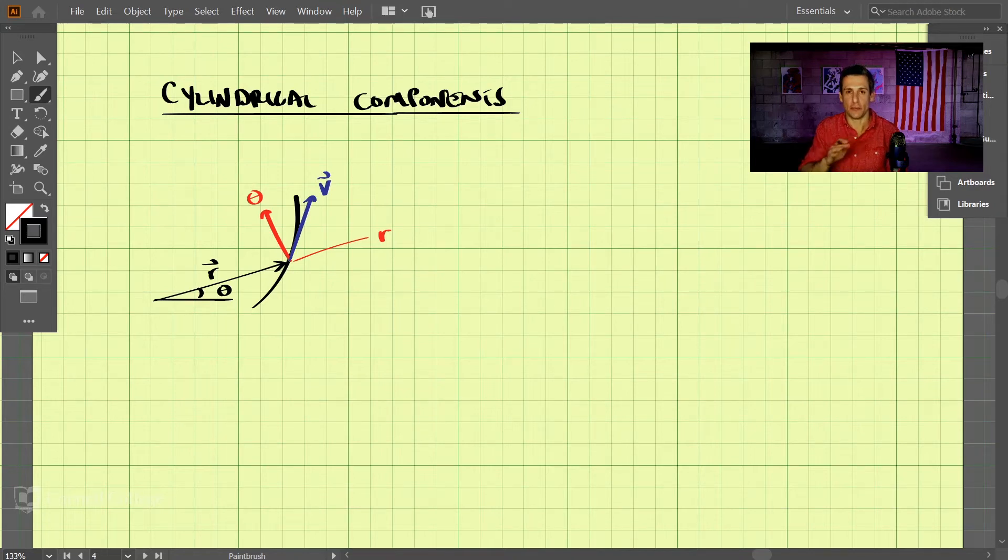In some problems, it's convenient to break things down into cylindrical coordinates. So in the cylindrical coordinate system, if we have a particle, let's say a particle right here, we have the coordinate system where we have a radial component and a transverse component.